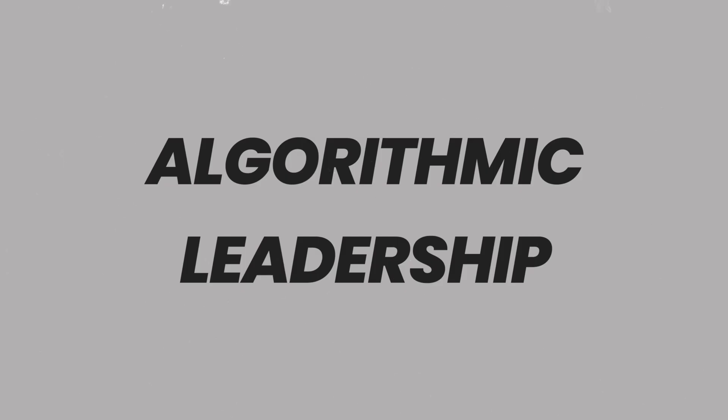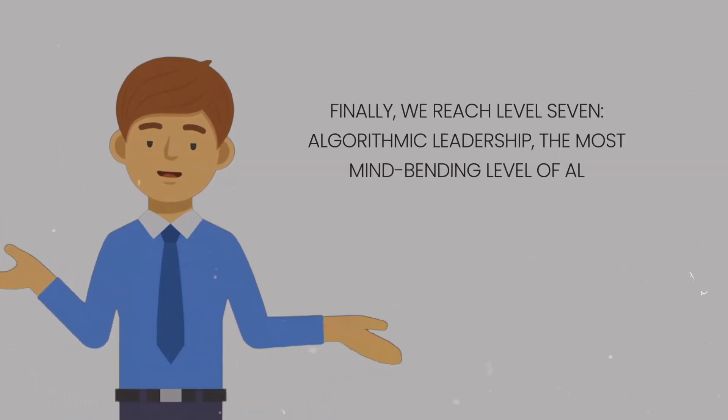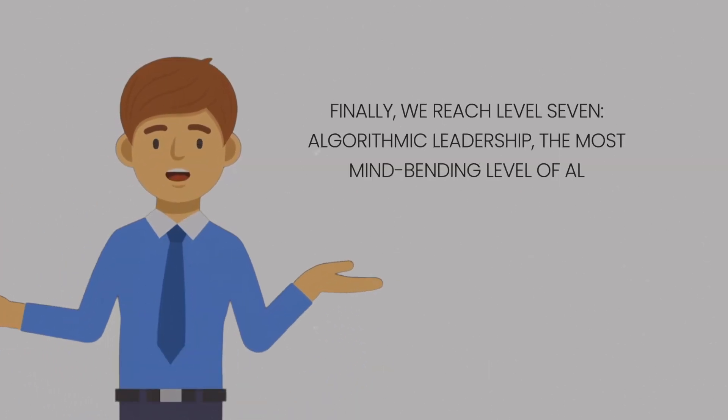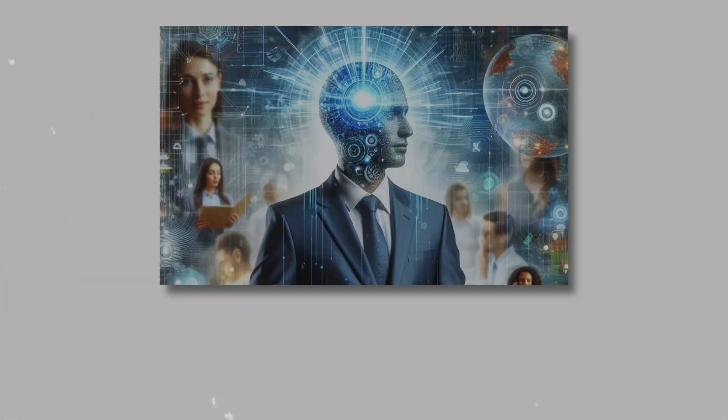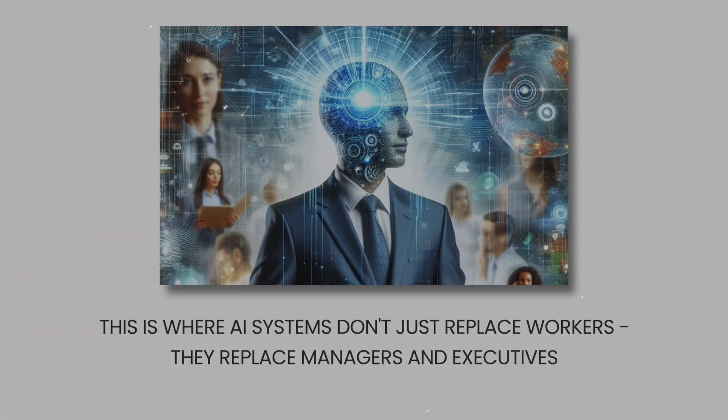Algorithmic leadership. Finally, we reach level seven: algorithmic leadership, the most mind-bending level of all. This is where AI systems don't just replace workers, they replace managers and executives.